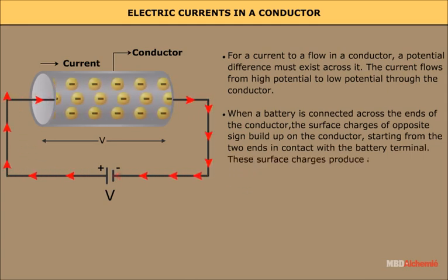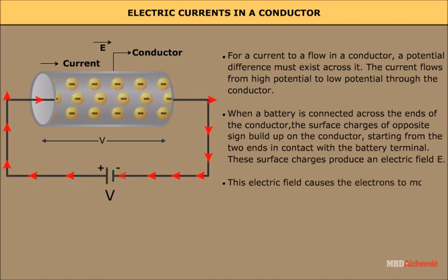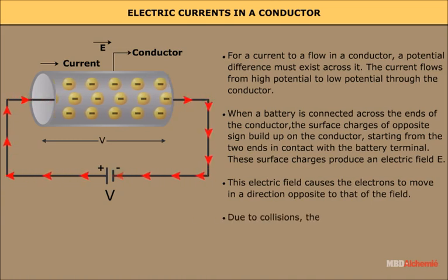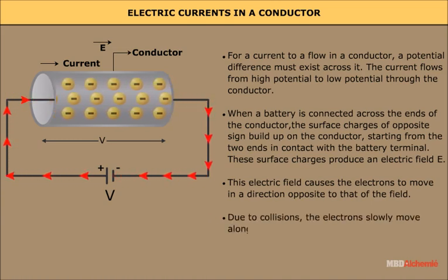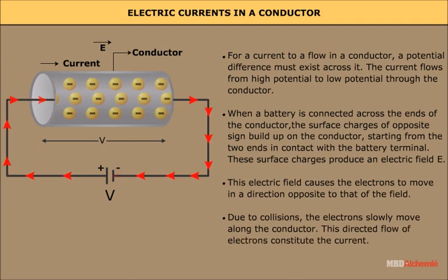These surface charges produce an electric field E. This electric field causes the electrons to move in a direction opposite to that of the field. Due to collisions, the electrons slowly move along the conductor. This directed flow of electrons constitutes the current.